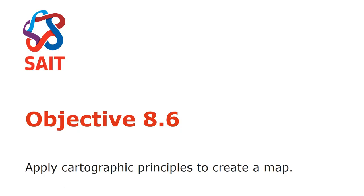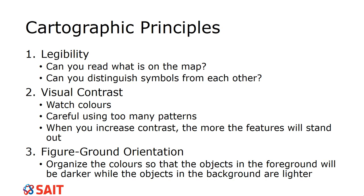Taking that, we're going to talk about cartographic principles. This is cartography — this is what makes a map look good. It's kind of the art of making maps. There are really five components to cartographic principles.